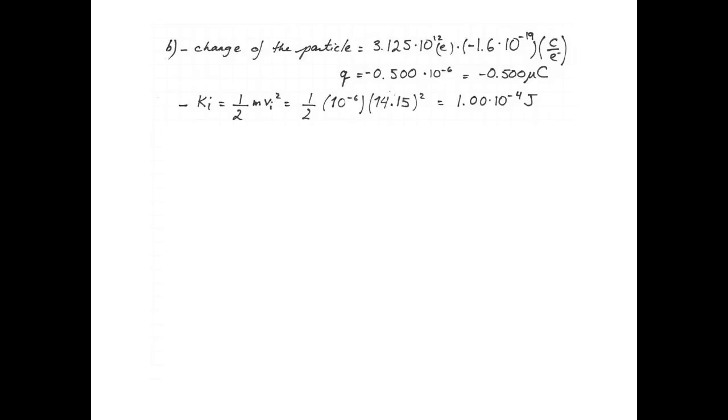Then, I calculate the initial kinetic energy of the particle, one half multiplied by the mass. Remember that 1 milligram is actually 10 to the negative 6 kilograms, and multiplied by the speed squared. So 14.15 squared, and that gives us 1 times 10 to the negative 4 joules.